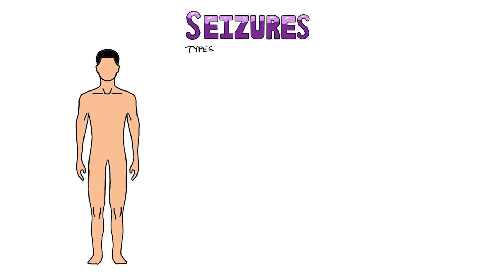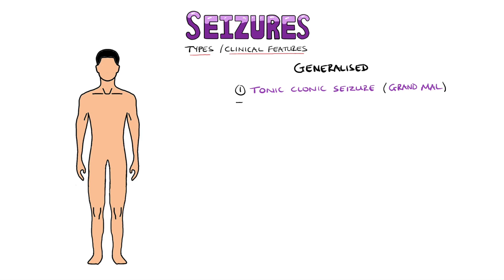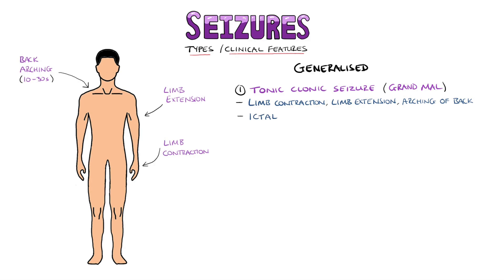There are six main types of generalised seizure. The most well-known is the tonic-clonic seizure, previously known as grand mal. The seizure presents with a contraction of the limbs, followed by limb extension and arching of the back, usually lasting 10 to 30 seconds. At this stage, you may also hear what is known as the ictal cry, a sound produced due to the contraction of the chest muscles. Following this, the limbs may begin shaking, and in total a tonic-clonic seizure would last around 2 to 3 minutes.